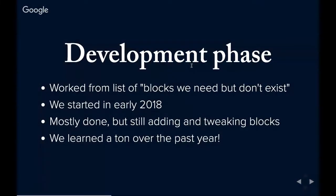That brings me to step three: we need to make some custom blocks because our content editors are expecting these pieces of content like cards and card decks, but they don't exist in Gutenberg — so we have to build them ourselves. We went through a development phase that was basically most of 2018, working off this list of blocks we need but don't actually exist in the Gutenberg editor. We started in early last year and we're pretty much done adding all of the custom Gutenberg blocks we need, though we're still tweaking a lot of them.